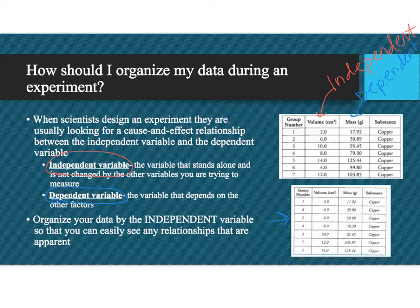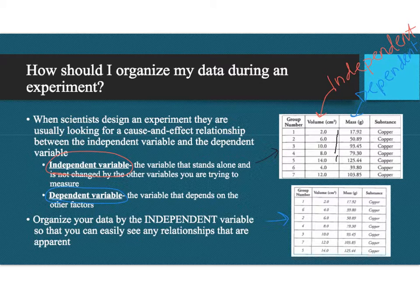When you're organizing your graph, this first graph, if we take a look at the independent and dependent variables, they don't show a nice pattern. It goes from 2 to 6 to 10, which increases, but then it decreases when you get to 8, increases at 14, decreases at 4, and increases again at 12. So there's not a clear relationship between volume and mass in this one.